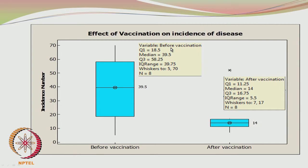For the variable before vaccination: the first quartile is 18.5, the median is 39.5, and the third quartile is 58.25. The interquartile range is the difference between the third and first quartiles, which comes to 39.75, and the number of data points is 8. After vaccination, the first quartile is 11.25, the median is 14, and the third quartile is 16.75. The interquartile range has reduced from 39.75 to 5.5.